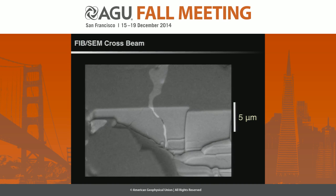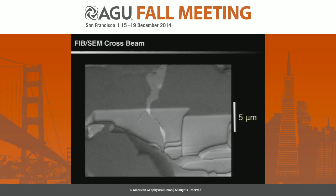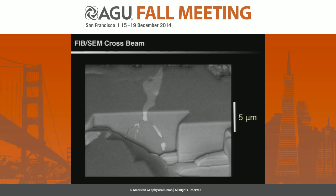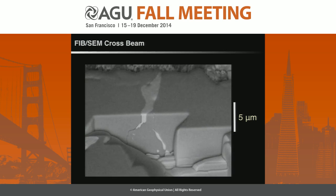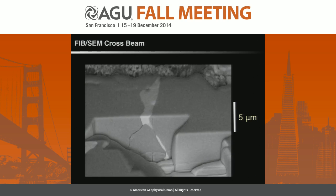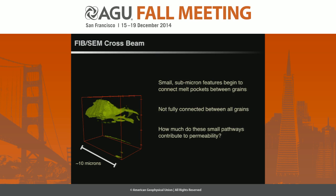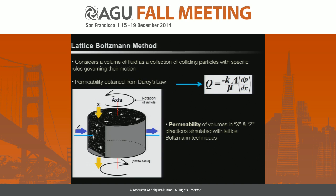We've also done some work on the FIB — this is a FIB-SEM crossbeam movie showing another way of looking at the three-dimensional melt structure. Because of the very high spatial resolution of this technique, we can only image about one melt blob at a time. This is a reconstruction of a three-dimensional small five-micron melt blob from the FIB image. We can see with deformation that we start to get these tendrils, but it's still not fully connected, and we're working on understanding how much these small melt features contribute to the permeability.